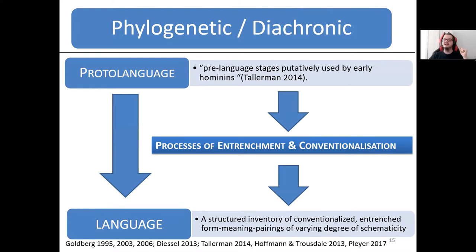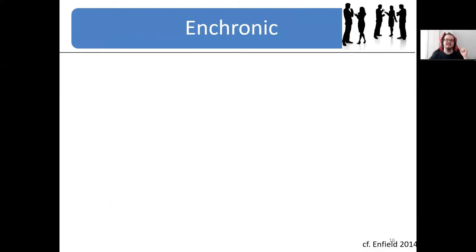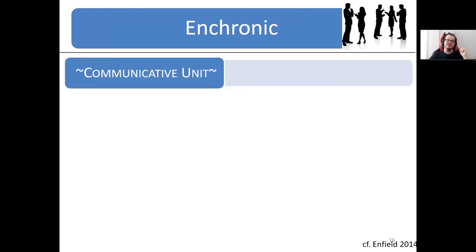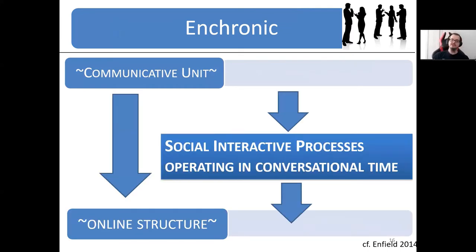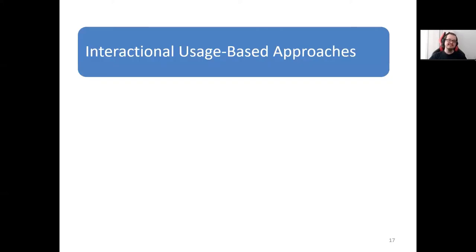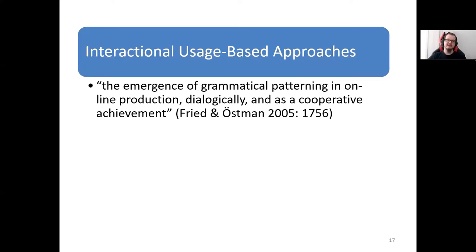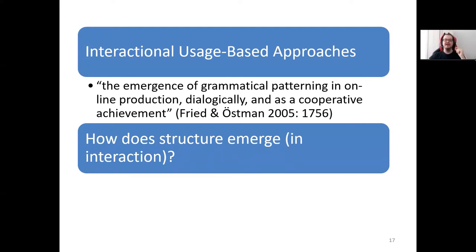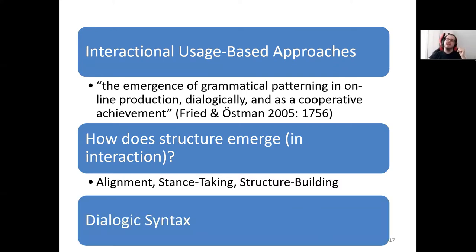For that I'm introducing another time scale: the enchronic time scale, which is the time scale of interaction in the moment. On the enchronic level we have a communicated unit, and then social interactive processes operating in conversational time leading to online structure. This is expressed in interactional usage-based approaches, which look at the emergence of grammatical patterning in online production dialogically as a cooperative achievement. The question is how does structure emerge in interaction? Things that have been proposed include processes like alignment, turn-taking, structure building, and dialogic syntax — one particular area I want to discuss in more detail.